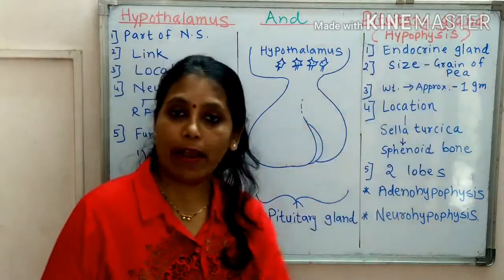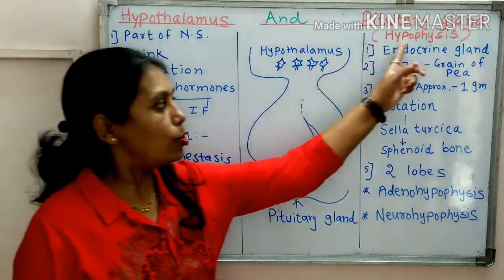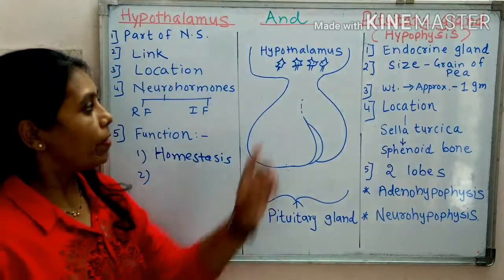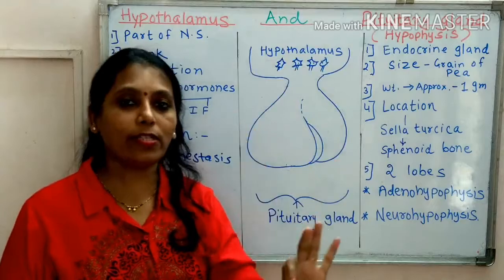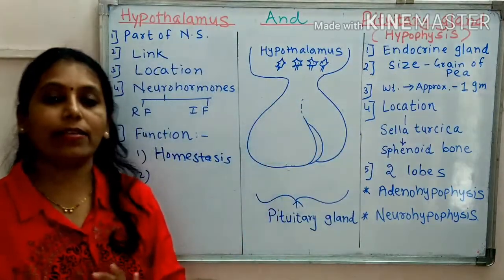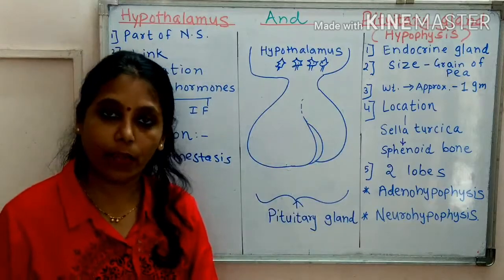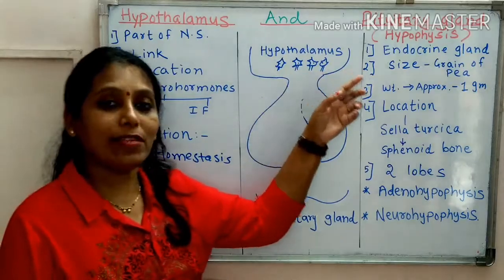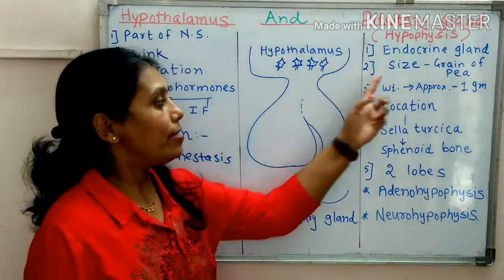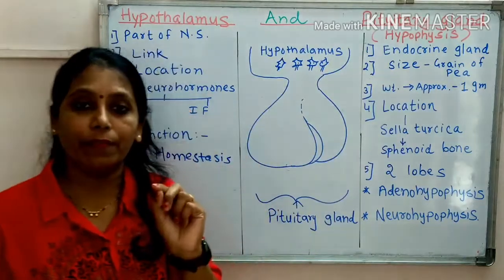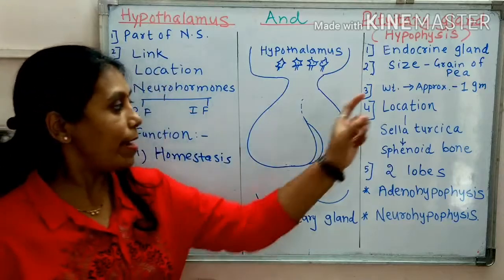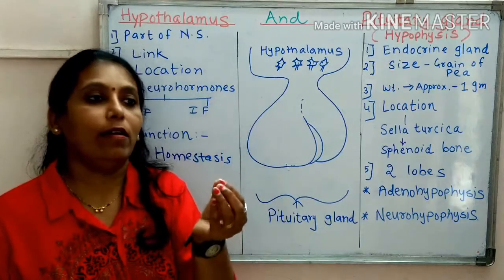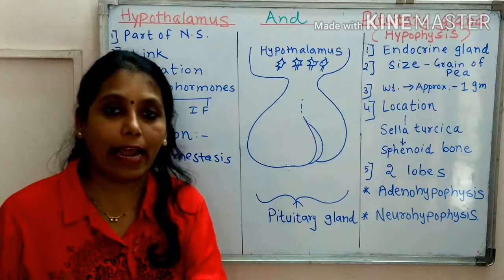Now come to pituitary gland. Pituitary gland is also called as hypophysis — this is another name of pituitary gland. It is one of the smallest endocrine glands and this gland is called as the master gland. Why it is called master gland, we will study in detail later on. If you see the size of this gland, it is like a grain of pea — it is very, very small.